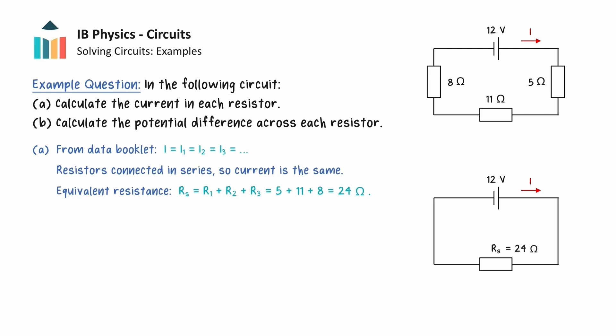Now observe that the terminals of the cell are directly connected to the ends of the equivalent resistor, so the potential difference across this resistor is equal to the voltage of the cell, 12 volts. We can now rearrange the definition of resistance to make current the subject and substitute in the relevant values.